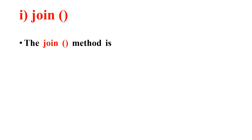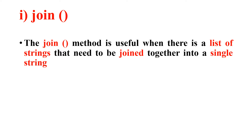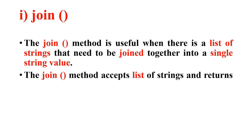The first method we will consider is join. The join method is useful when there is a list of strings that need to be joined together into a single string value. The list will have individual, separated elements, and the join method accepts such a list and joins them together. The input is a list and it returns a concatenated string.